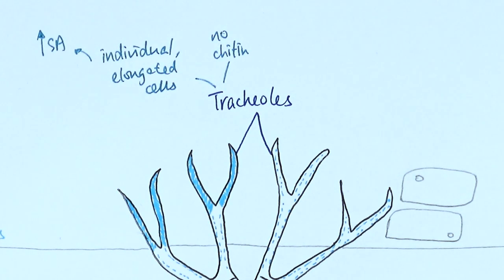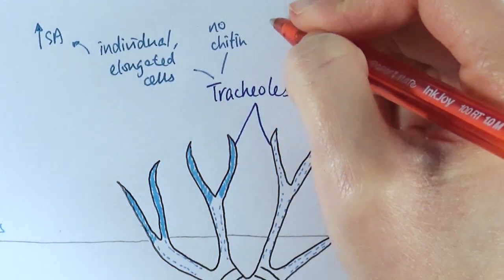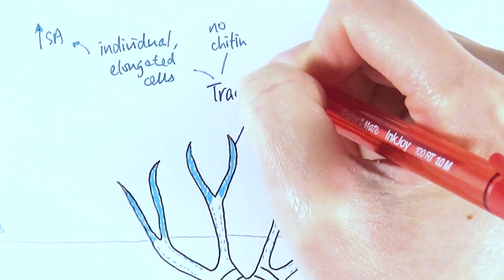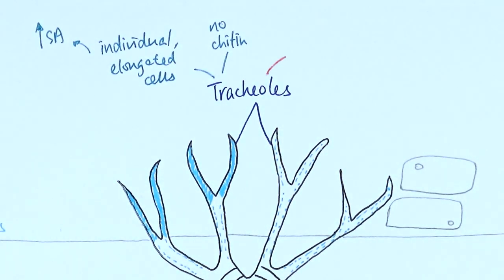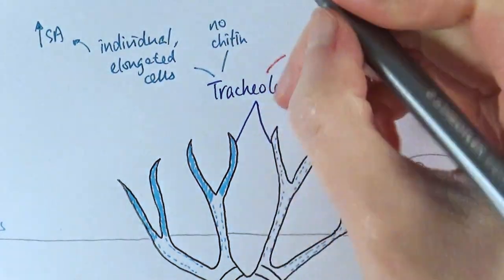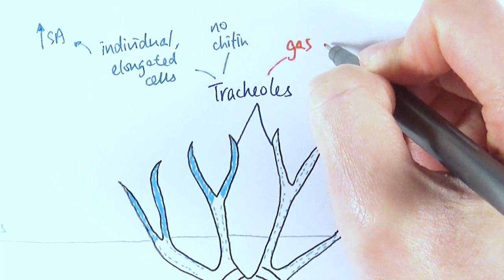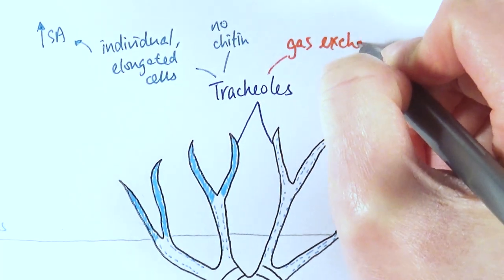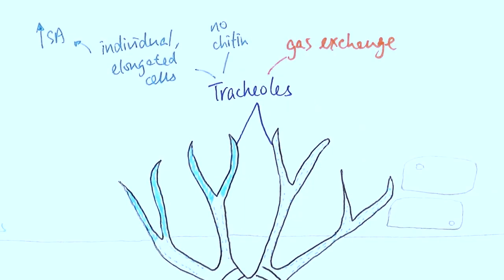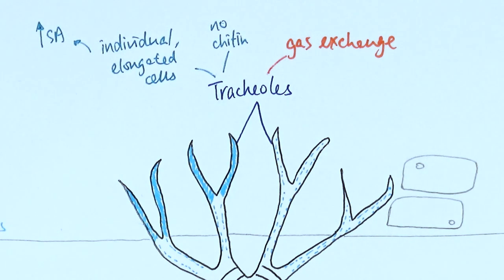They are called tracheoles. Tracheoles are individual elongated cells and the idea is to increase the surface area. And also they don't have any chitin in it, meaning it is permeable to gases. And hopefully that is obvious about what kind of function they have, which is that they do gas exchange. So actually the tracheoles is kind of like the alveoli in our own system.